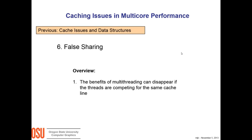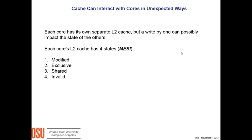This next topic is called false sharing. This follows very nicely from our previous discussion of cache issues and data structures. The general theme is that the benefits of multi-threading can vanish if the threads are all competing for the same cache line. This is especially frustrating because it will look like you've done everything right. First of all, we have to understand a little bit about cache.